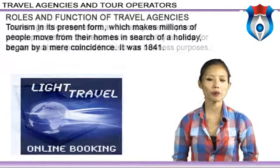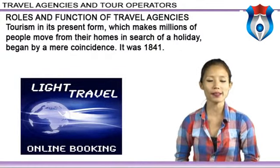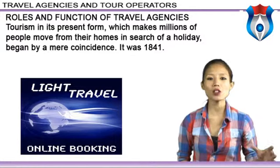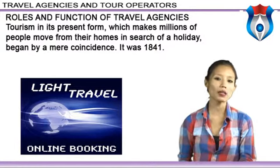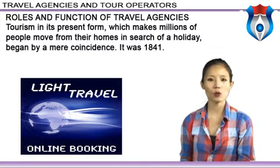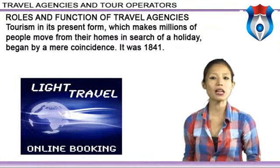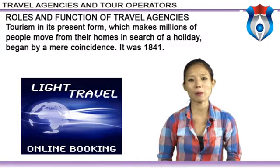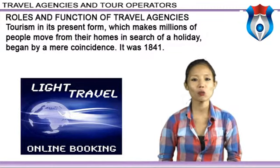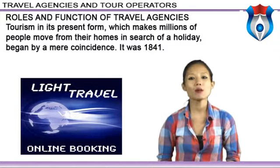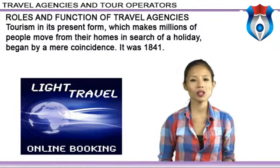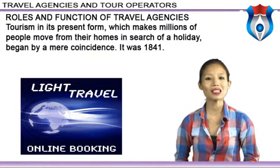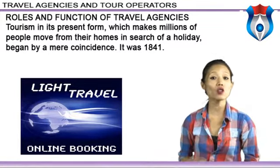Let us now discuss the roles and function of travel agencies. Tourism in its present form began by a mere coincidence. In 1841, Thomas Cook, a very intelligent and active member of a temperance society in England, organized a trip by train for 570 members of his society to a distance of 22 miles. He was the first agent to buy tickets in bulk and sell them back to other people. The experiment succeeded and everybody was happy — the cost of the return trip was only one shilling each. Mr. Cook had done this on a no-profit basis, but it gave him new ideas about turning it into a business.